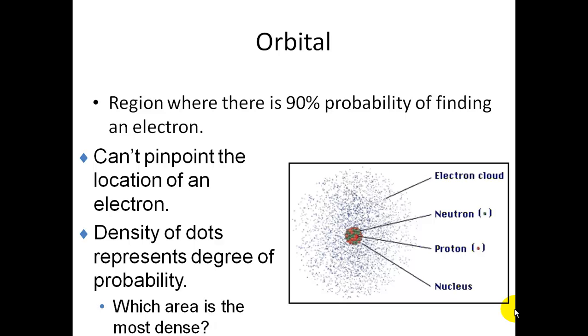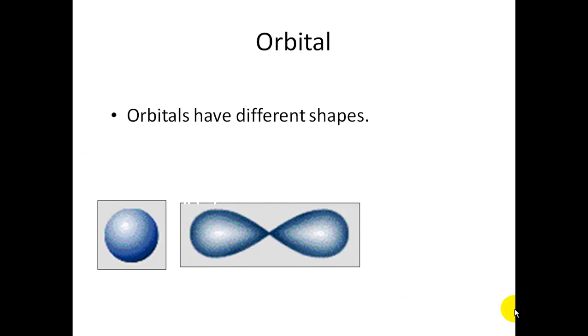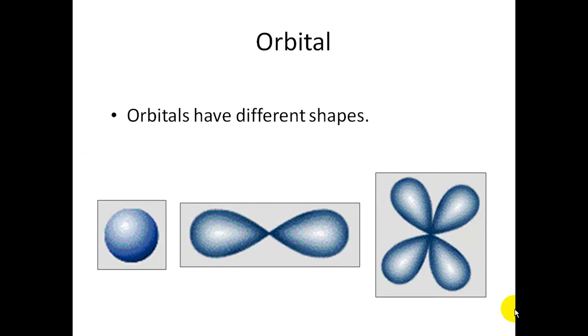The density of the dots in this diagram represent the degree of probability. So, if you look at where it's most dense, which area is the most dense, is obviously closest to the nucleus, and that's where you would most likely find an electron. You will learn more about orbitals in chemistry, but there are different shapes of them, and this is the pathways that the electron can move. Electrons can go in circles, or they can do like a figure eight, or way more complex movement.